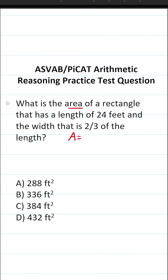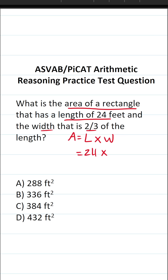How do you find the area of a rectangle? Well, that formula is very simple — it's length times width. In this case, we know our rectangle has a length of 24 feet, so this becomes 24 times its width. Its width is two-thirds of its length, so we're going to have to do some work to determine the width of this rectangle.